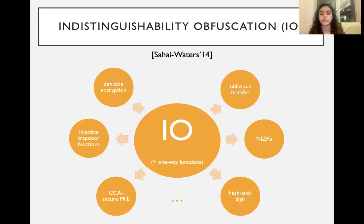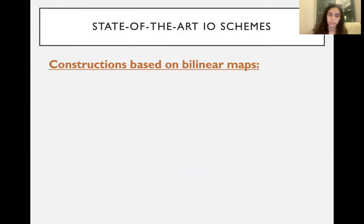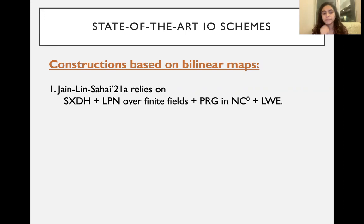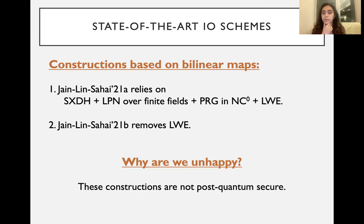IO, especially in recent years, has been shown to imply most main cryptographic primitives that we are trying to build today, which means that it's becoming even more and more important for us to try to construct IO with a security proof. As we'll see in a second, most of the current state-of-the-art IO either relies on assumptions such as bilinear maps, which are not known to be post-quantum secure, or on very complicated interactive non-falsifiable assumptions. But first, to talk about some current state-of-the-art IO schemes, a recent one by JLS used the external Diffie-Hellman assumption, LPN over finite fields, Goldreich, and LWE, and then later managed to remove LWE using only the first three assumptions. Again, we're unhappy with these just because they're not post-quantum secure. We are going to try to base IO solely on LWE-like assumptions, which are believed to be post-quantum secure.